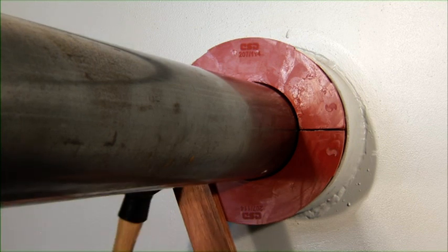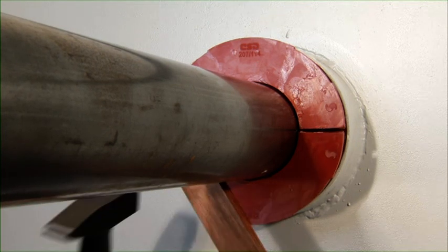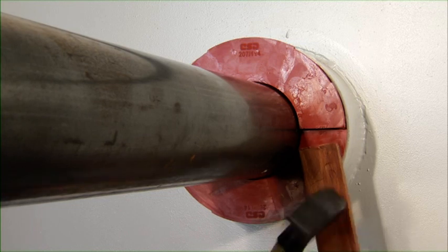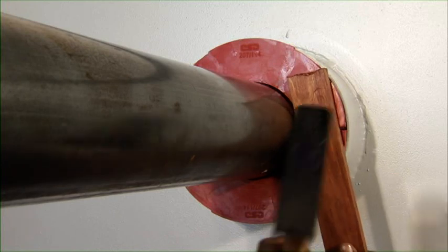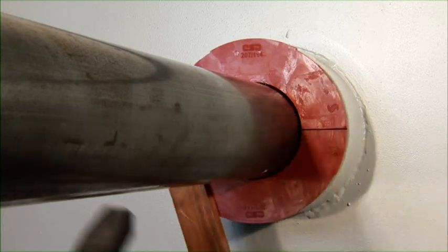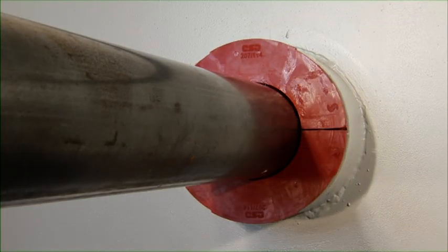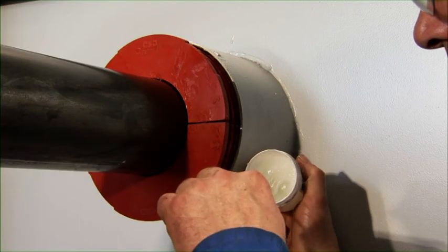This can be done by hand or by using a hammer and a piece of wood. When installing the second plug, the air between both plugs will be compressed. Therefore, it has to be released from time to time by inserting a screwdriver between both plug halves.